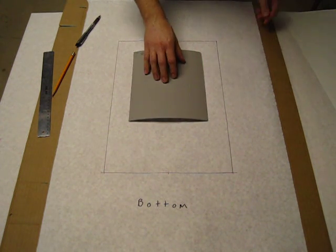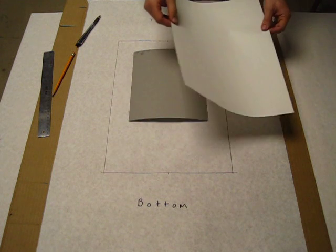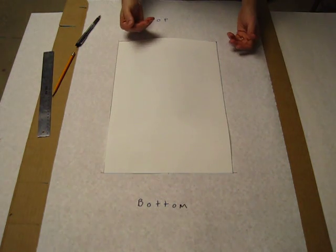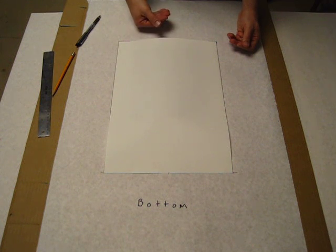Now we know where to place our matrix each and every single time that we're going to print. After we've inked it up, we can place it here, come over, place our paper within the margins. There we know that our paper is going to land on our matrix pretty close to where we want it every single time.